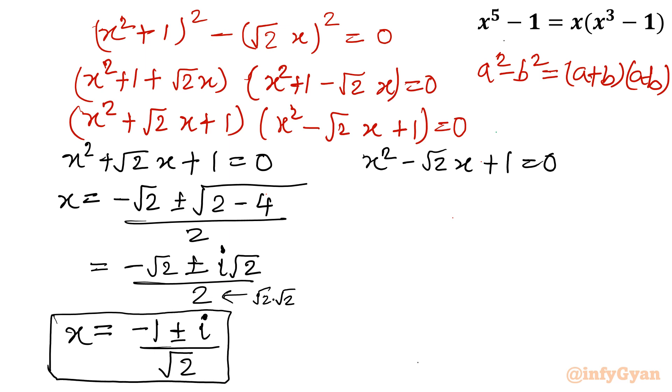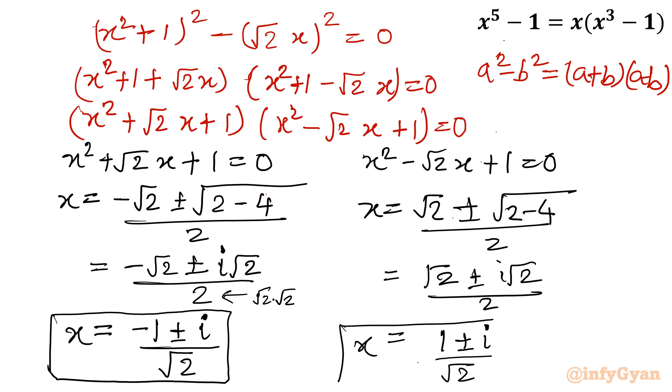Let us consider the second equation. So x = √2 ± √(2 - 4) divided by 2. Equal to (√2 ± i√2)/2. So conclusion is (1 ± i)/√2. Again we are having two complex solutions. So overall four. This is how we can conclude.